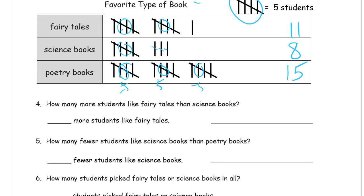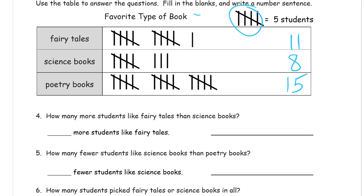Poetry books: five, ten, fifteen — counting by fives makes this easy, or you can think of it as five plus five is ten, plus five more is fifteen. How many more students like fairy tales than science books? Fairy tales is more, so what's the difference? Our number sentence is 11 minus 8. Count the difference — that would be three more.